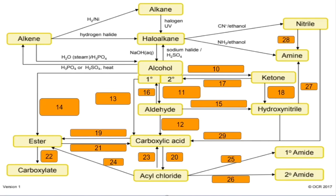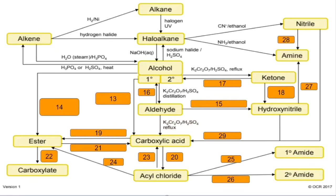Number ten: secondary alcohol to ketone — acidified potassium dichromate, where the acid is sulfuric acid, and you would reflux that. Number eleven: primary alcohol to aldehyde — it's the same oxidizing agent but to get the aldehyde you need to do it under distillation. Number twelve: aldehyde to carboxylic acid — same oxidizing agent and you would generally heat that under reflux.